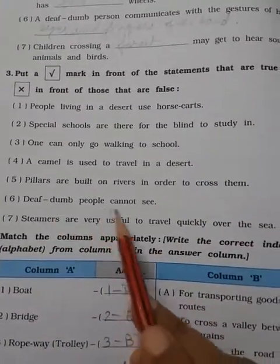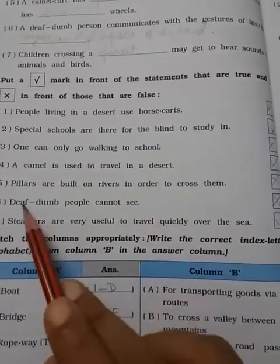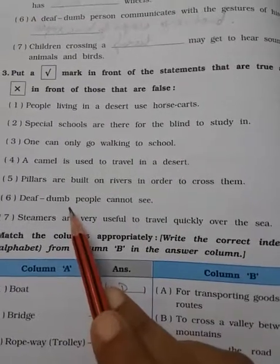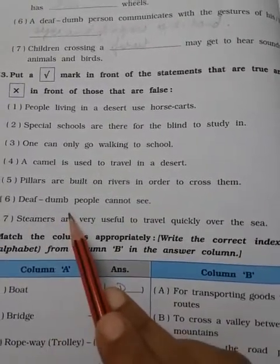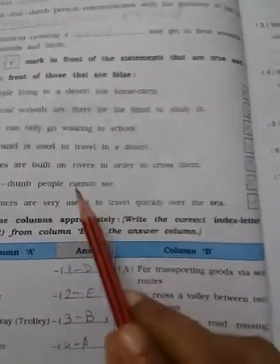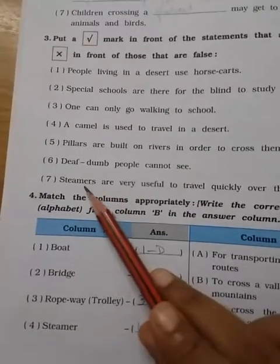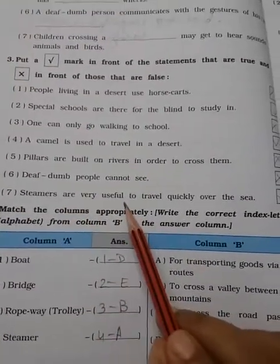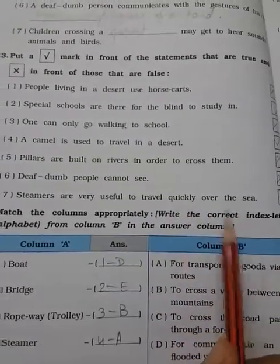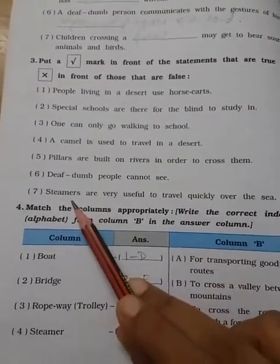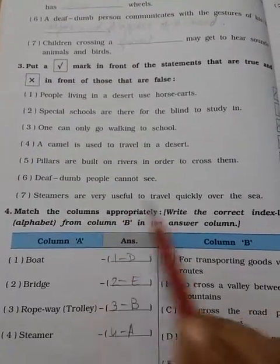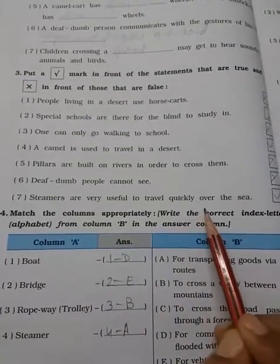Deaf and dumb people cannot see. Wrong. They cannot listen. They cannot speak. Deaf and dumb means they cannot speak or listen. Answer will be wrong. Steamers are very useful to travel quickly over the sea. Yes, the steamer has the speed motor, so it will run very fast and cross the sea. The answer is right.